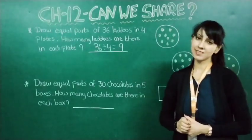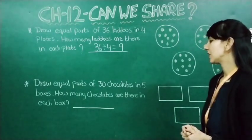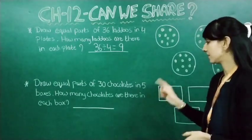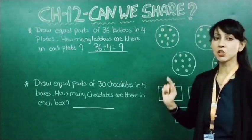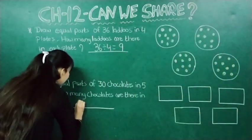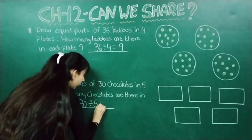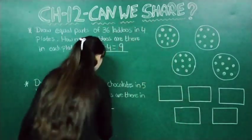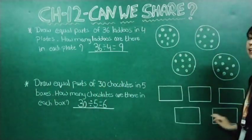Now students, let's see the next one. Draw equal parts of thirty chocolates in five boxes. How many chocolates are there in each box? Total number of chocolates is thirty, and here you can see five boxes. We have to place these chocolates equally in five boxes. Thirty divided by five — when thirty comes in the table of five, five sixes are thirty — so here it will come six. Six chocolates we will place in each of these five boxes.